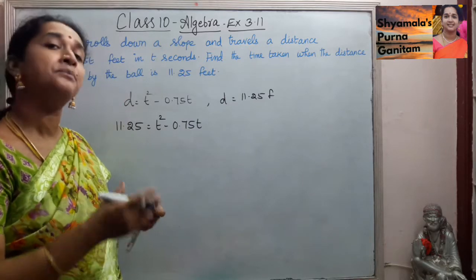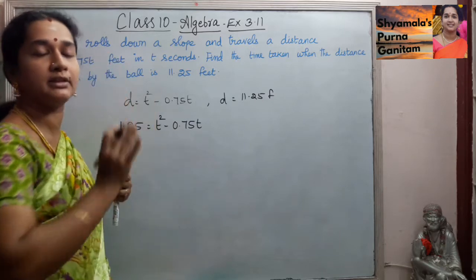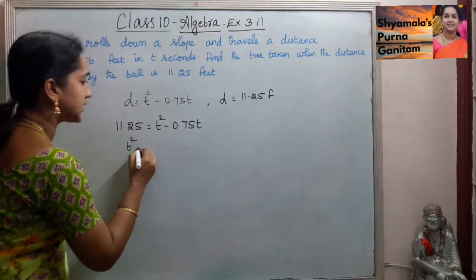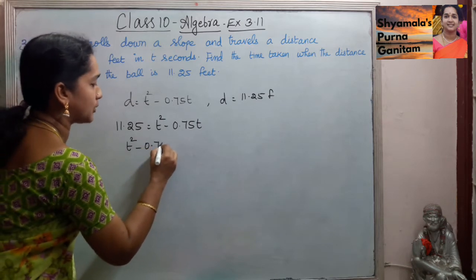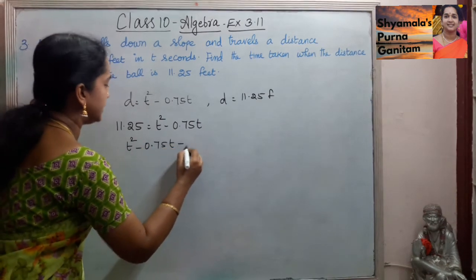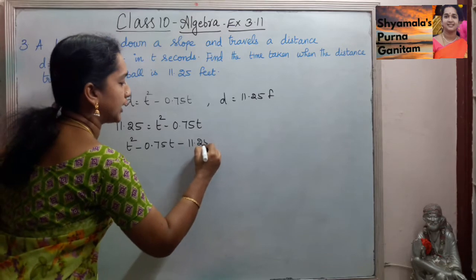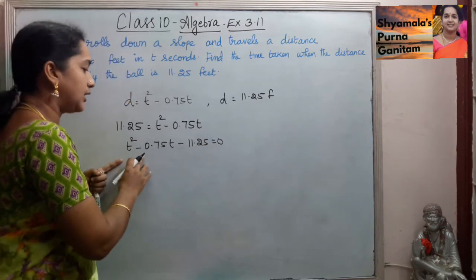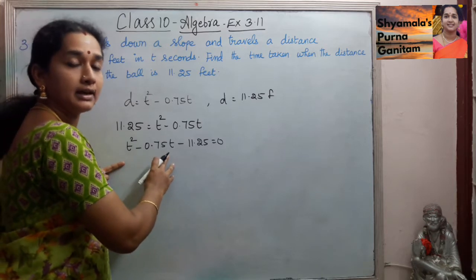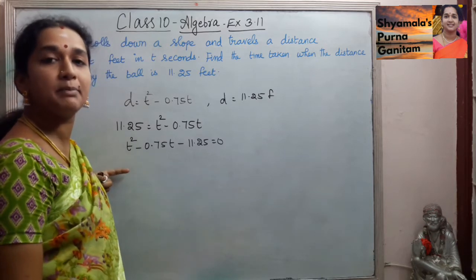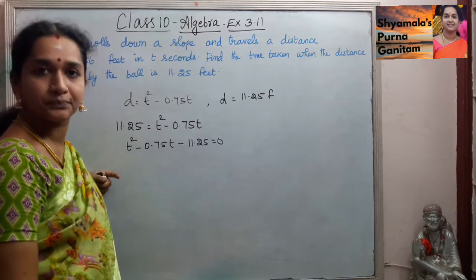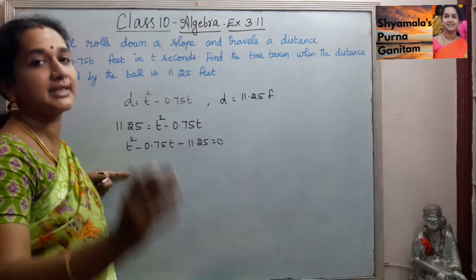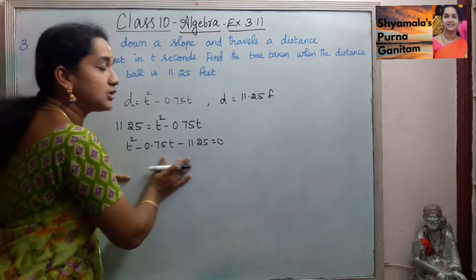When we simplify this, we will get two values — whichever is relevant, that is the answer. When we simplify, t squared minus 0.75t minus 11.25 equals 0. This is of the form ax squared plus bx plus c equals 0.